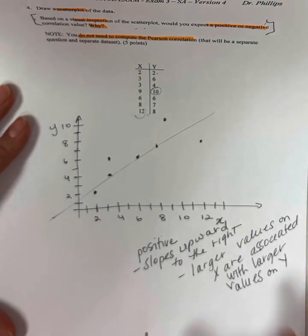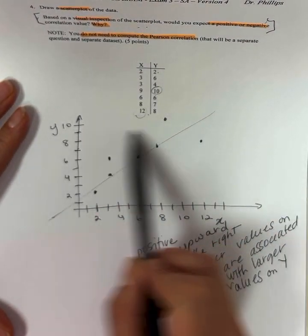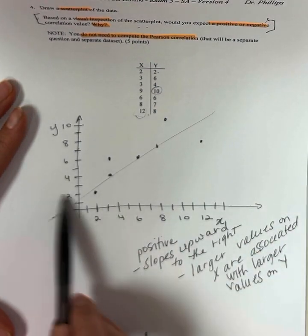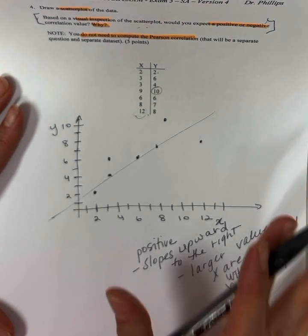I'm just trying to get off the screen there. When we have these larger values of x, they're also larger values of y. And smaller values of x are associated with smaller values of y. So, that's a positive correlation.